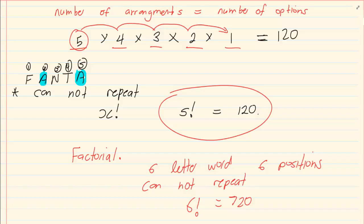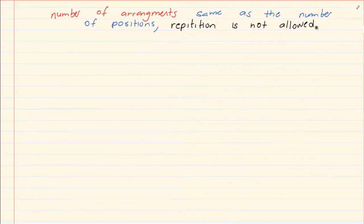So what is the third rule that we are learning? The third rule says that if we have a number of arrangements and it is the same as the number of positions. But repetition is not allowed. Then the rule is n factorial. So if I said five it would be five factorial. If I said six it would be six factorial. Now how would this become handy?